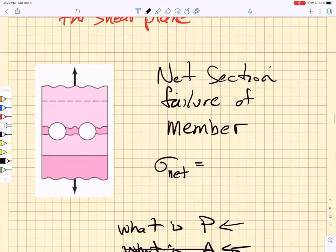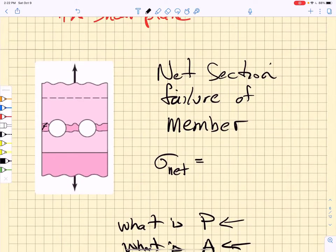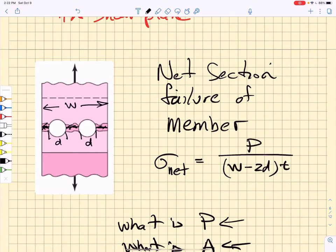The other sort of failure that we care about is this ductile failure of the intact ligament. And the way we find that is we first identify the overall width of the plate, and then we have these bolt diameters in here. And so the intact ligament is going to be W minus 2D times the plate thickness, and we divide the applied load, P,